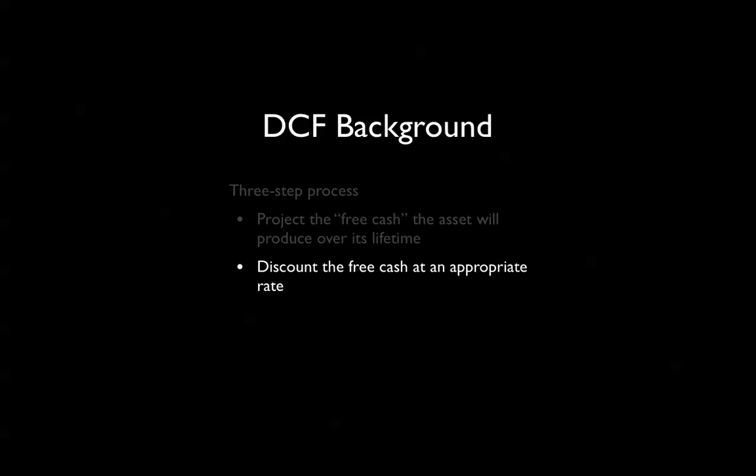Step two is to discount that free cash at an appropriate rate. What we're doing here is lessening the magnitude of the cash over time, because as we project further into the future, we have less and less confidence in the accuracy of our projection. So we need to diminish the value of cash produced far out in the future. Step three: we add up all those discounted cash flows, and once we've done that, we arrive at a single number — the intrinsic value of the asset in monetary terms.